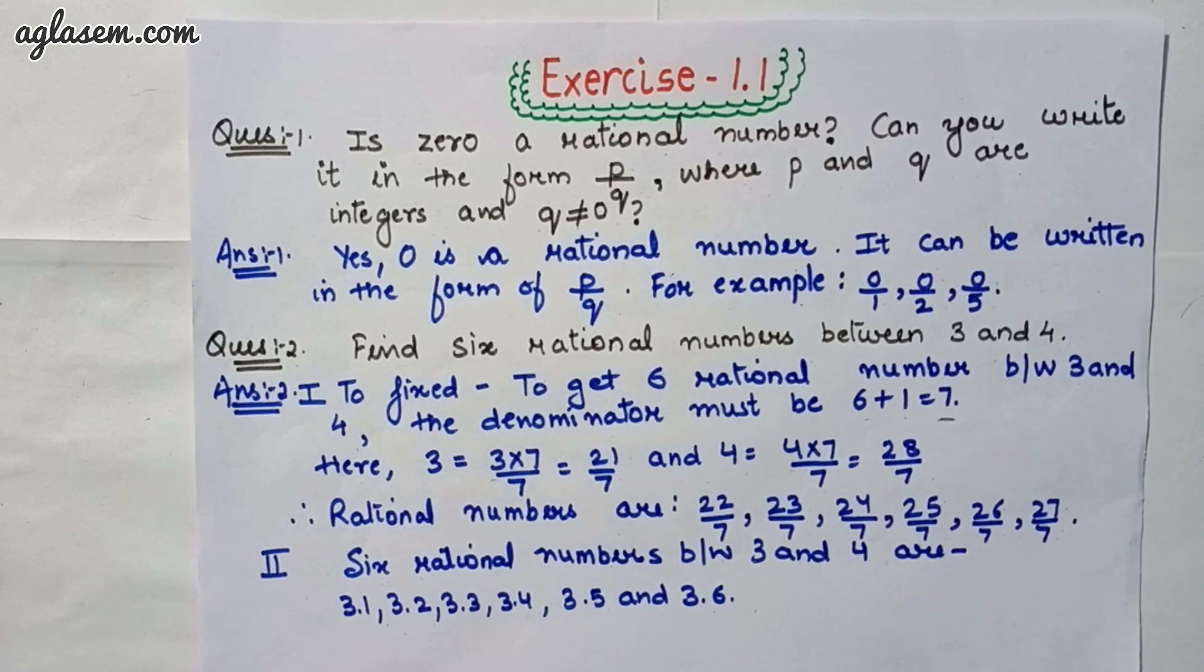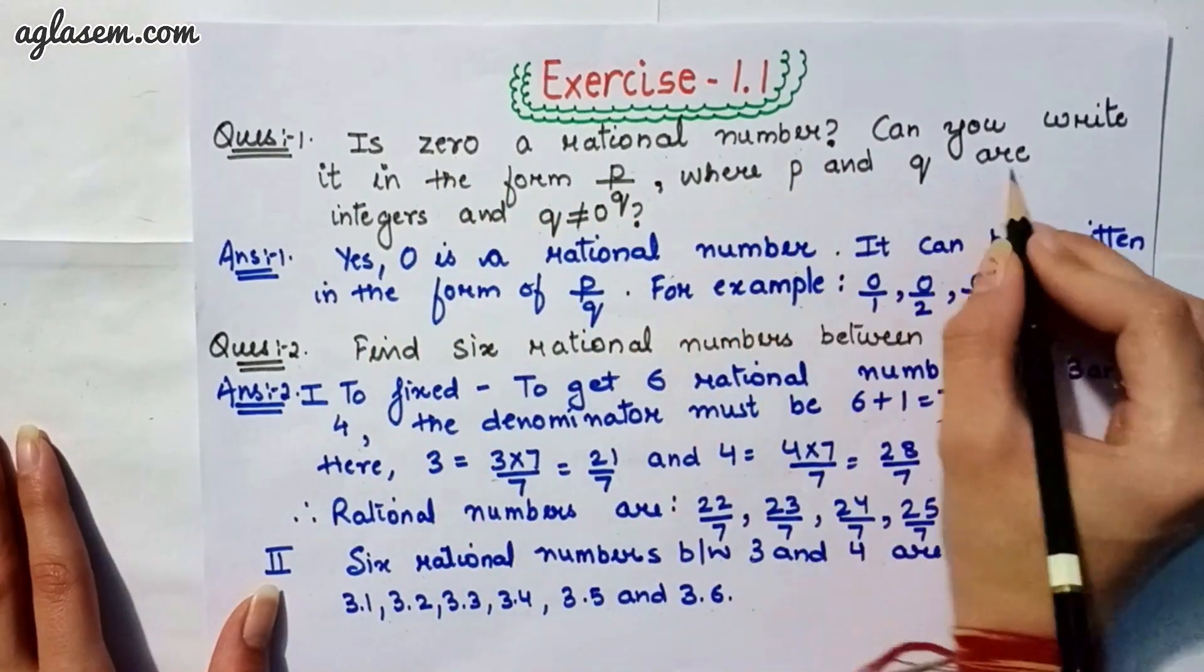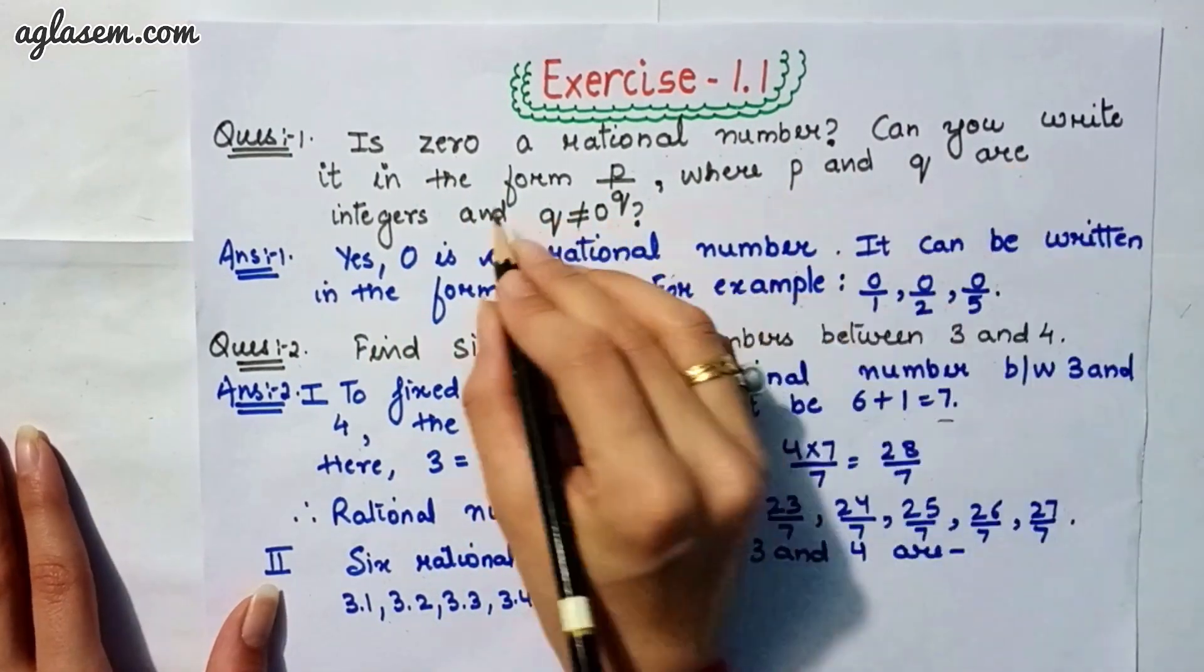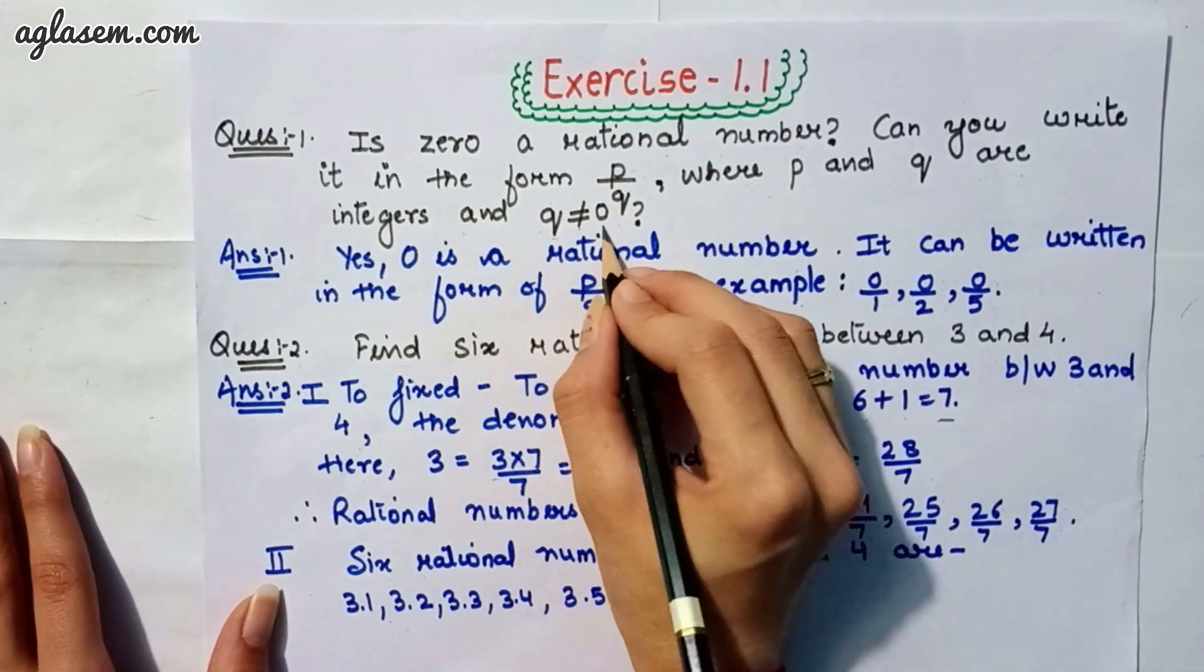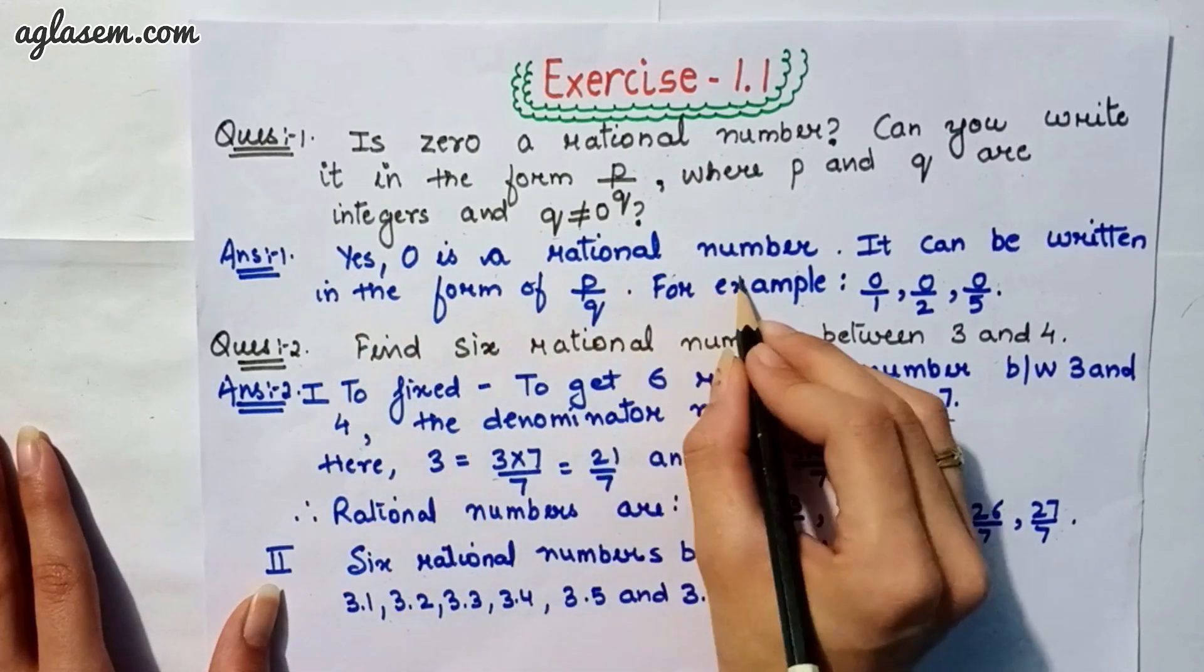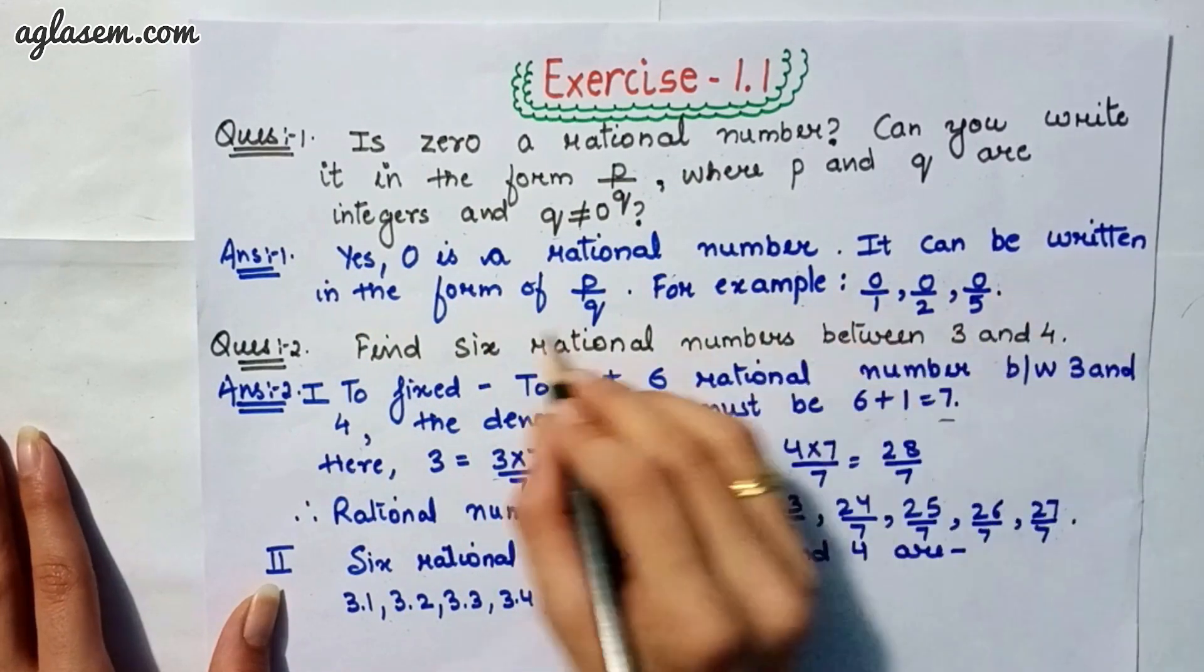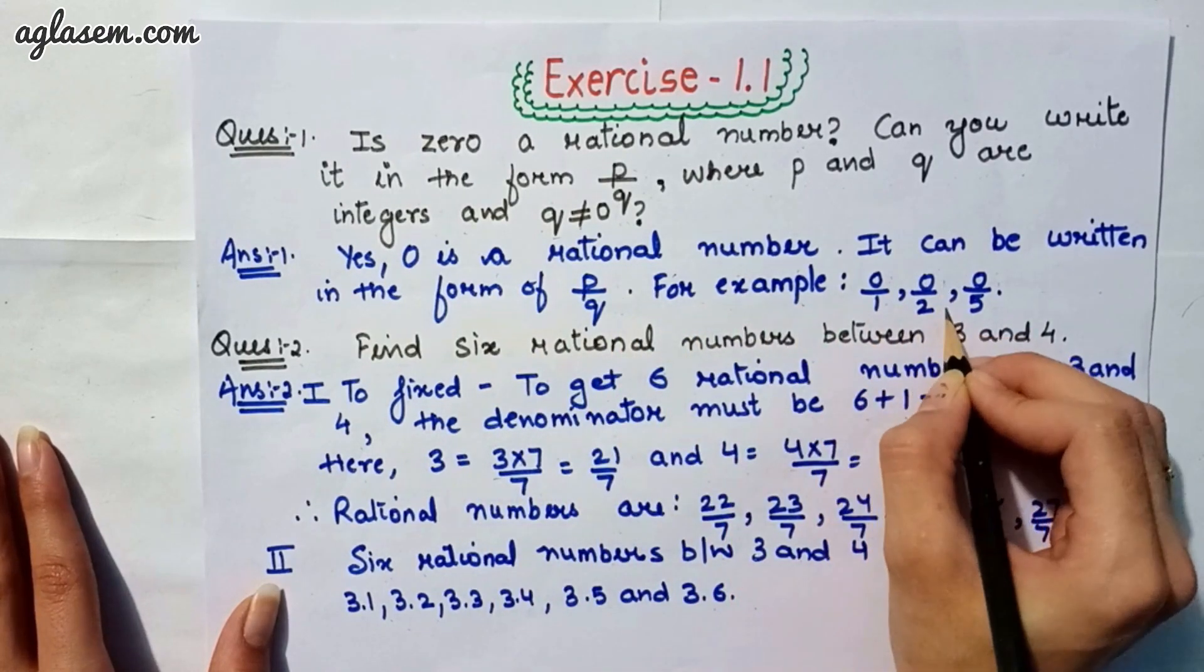Starting with the first question which says, is zero a rational number? Can you write it in the form of p upon q, where p and q are integers and q is not equal to 0? So, the answer is yes, 0 is a rational number. It can be written in the form of p upon q, for example, 0 upon 1, 0 upon 2, 0 upon 5.